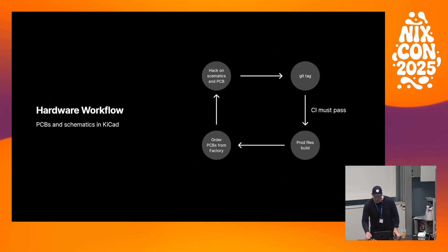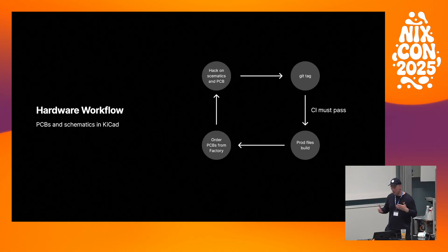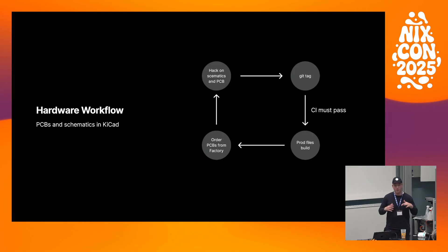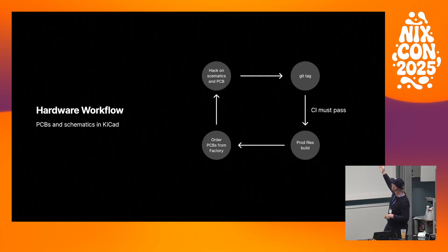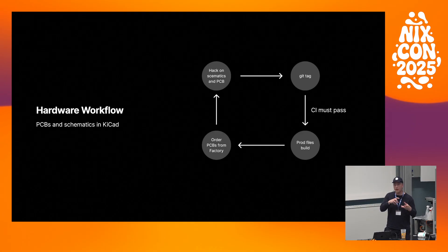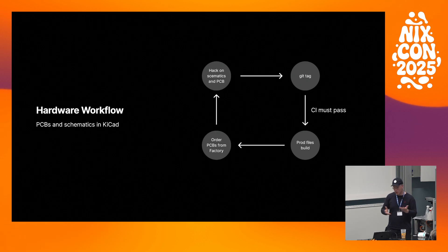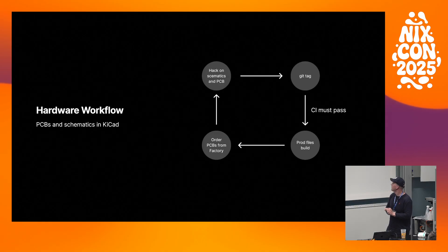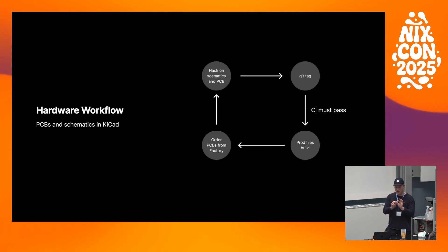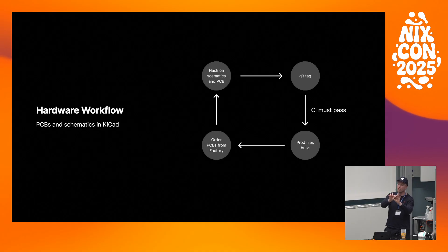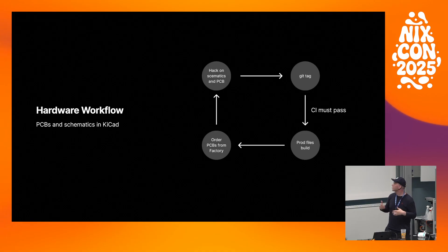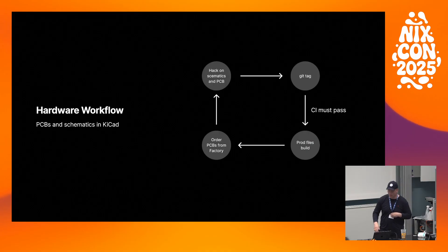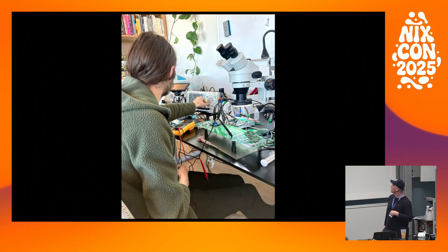For the hardware workflow: we have an extremely talented audio hardware guy in Sweden who hacks on schematics and PCB. He pushes to main, tags a kit branch, CI passes, and production files are automatically generated. KiCad ERC checks run inside the CI to make sure traces aren't overlapping, vias aren't too close, and all pins are connected.